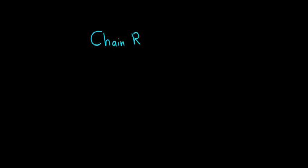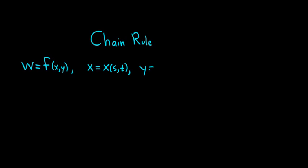In this video, we're going to talk about the chain rule for two independent variables. The setup is as follows: w is equal to a function of two variables, f(x, y). And x here depends on two variables as well — x is a function of s and t, and y is also a function of s and t. This chain rule tells you how to find the partial derivative of w with respect to s and with respect to t, because in essence w is a function of s and t since x and y are both functions of s and t.